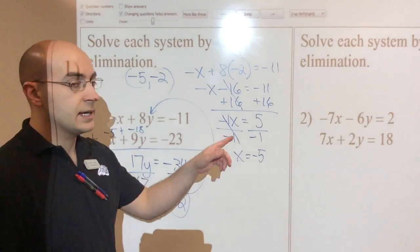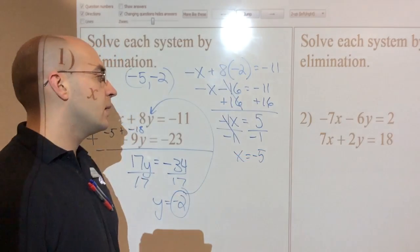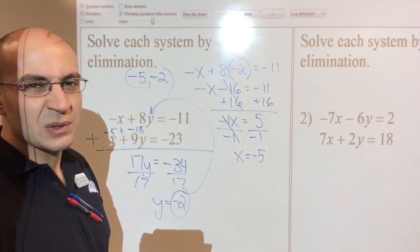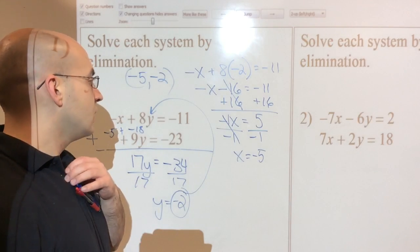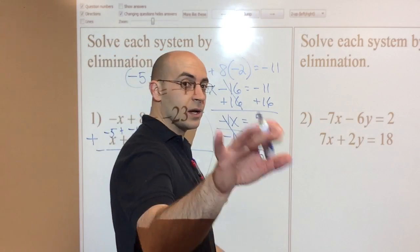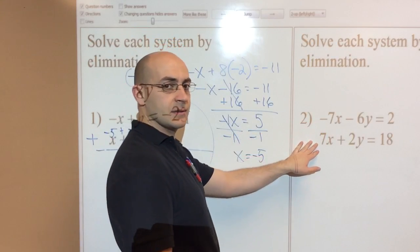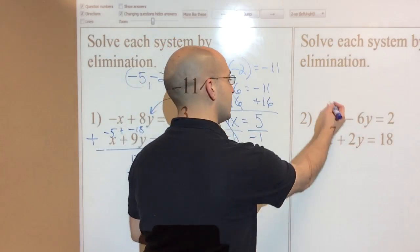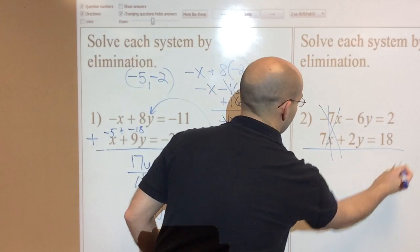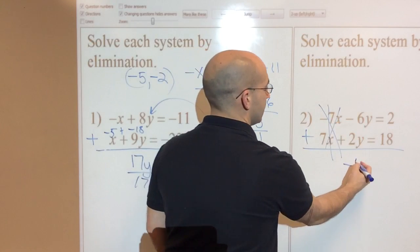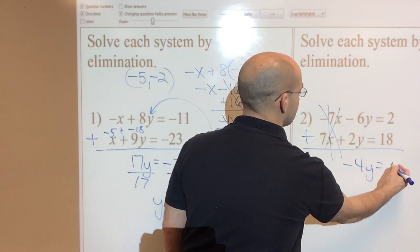If you have not paused me already, go ahead and pause me to try to do this one. I'll probably work it out really quick because I want to make sure you understand it. So hopefully you've unpaused and we're good. I've got a negative 7 and a positive 7x. Those eliminate because they add up nicely. Adding down, this is a negative 4y equals 20.